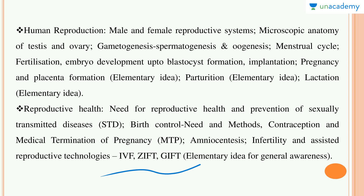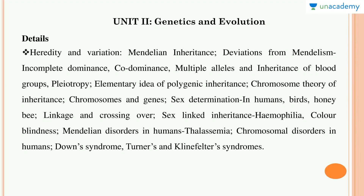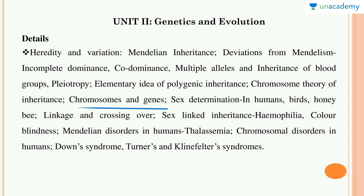Unit 2 is Genetics and Evolution. You will study Mendelian genetics, Mendelian inheritance, deviations from Mendelism, co-dominance, incomplete dominance, multiple alleles, and inheritance of blood groups. Questions often come from ABO blood groups — for example, determining a child's blood group given the parents' blood groups.